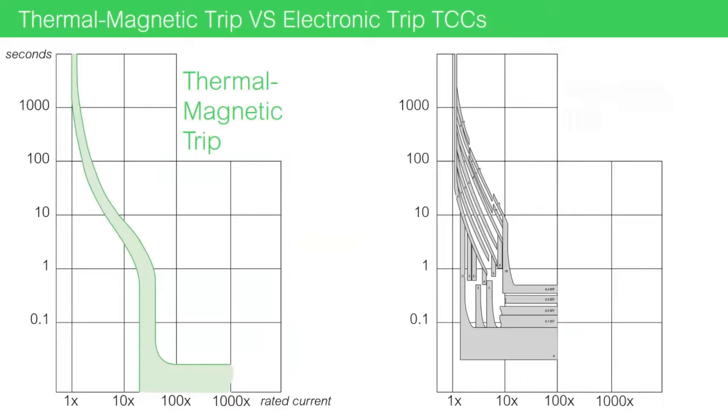We've been looking at the time-current curve for a classic thermomagnetic response. However, our time-current curves for electronic trip responses look much different.